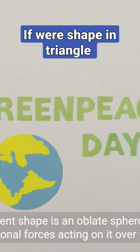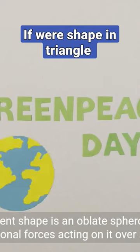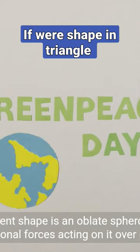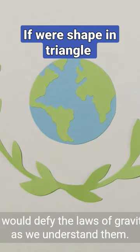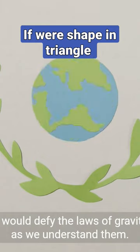The Earth's current shape is an oblate spheroid, which is the result of gravitational forces acting on it over millions of years. A triangular Earth would defy the laws of gravity and geophysics as we understand them.